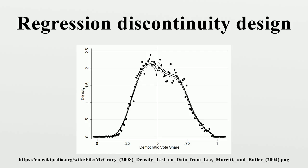For example, suppose a researcher wishes to study the impact of legal access to alcohol on mental health using a regression discontinuity design at the minimum legal drinking age. The measured impact could be confused with legal access to gambling, which may occur at the same age.